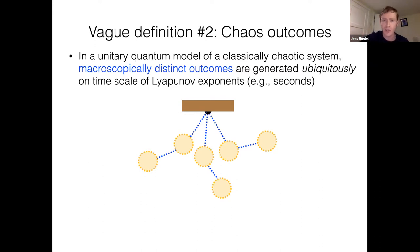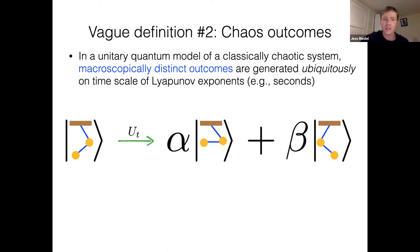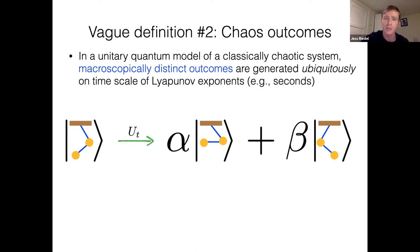Even if you start with something in a quasi-classical state — all atoms associated with wave functions well localized in position and momentum — in not too long, your unitary quantum model of this classically chaotic system is going to end up having support over these different macroscopically distinct outcomes. We don't see that directly. This is the cartoon version: we start with some quasi-classical description, we evolve to a superposition of different quasi-classical descriptions. And of course, this will be a continuum — I'm expressing it as a sum of two discrete outcomes, but in general it's a superposition over many continuous configurations.